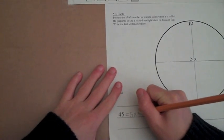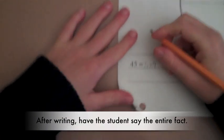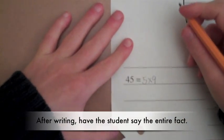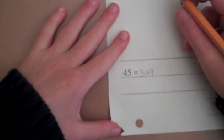OK. What's that position that you were at? Yeah. What was the position? 9. Nice job. Say that whole sentence for me. 45 equals 5 times 9. Beautiful.